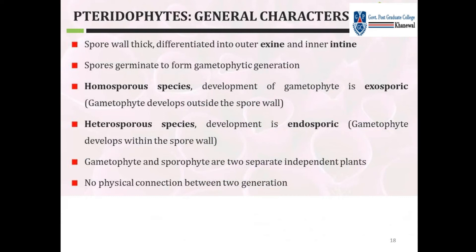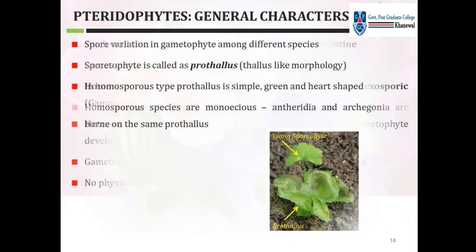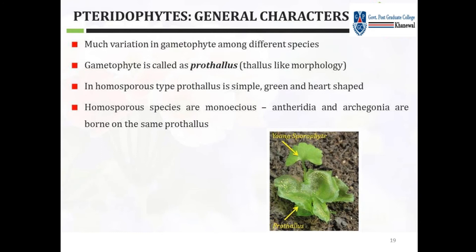In heterosporous species, gametophyte development is endosporic — the gametophyte develops within the spore wall. Gametophyte and sporophyte are two separate, independent plants with no physical connection between the two generations. There is much variation in gametophyte among different species. The gametophyte is called a prothallus.